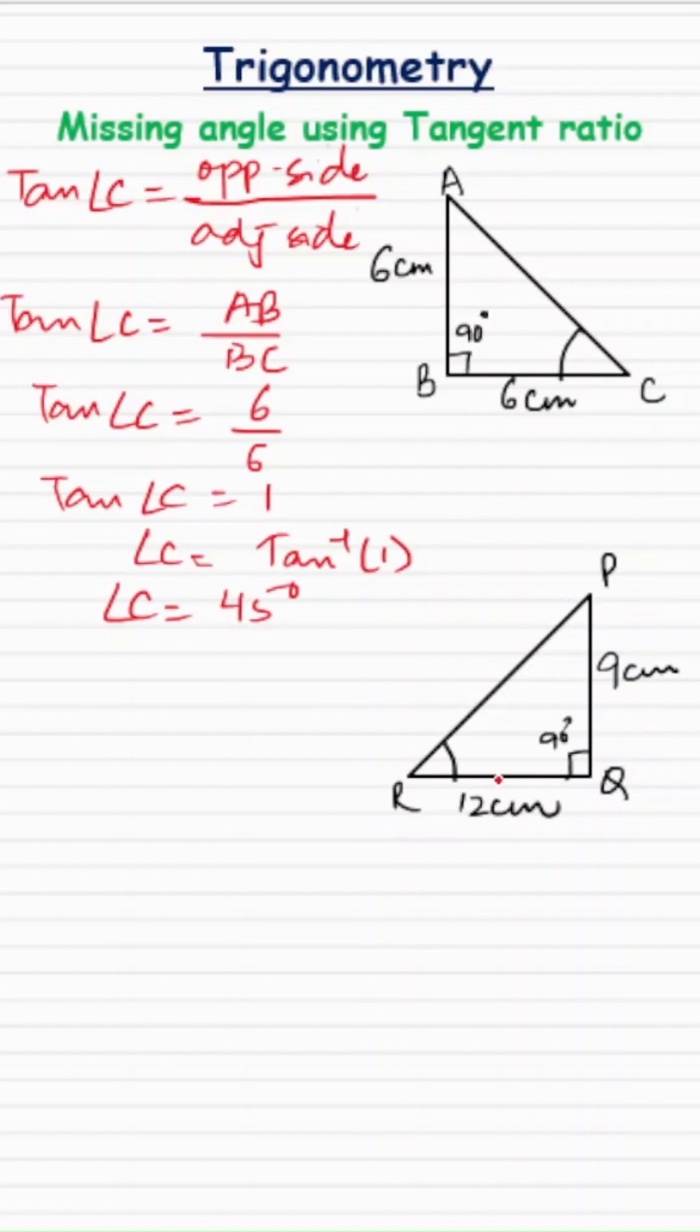In my second triangle, triangle PQR, angle Q is 90, PQ is 9, and QR is 12. I need to find angle R. Figure's not to scale.